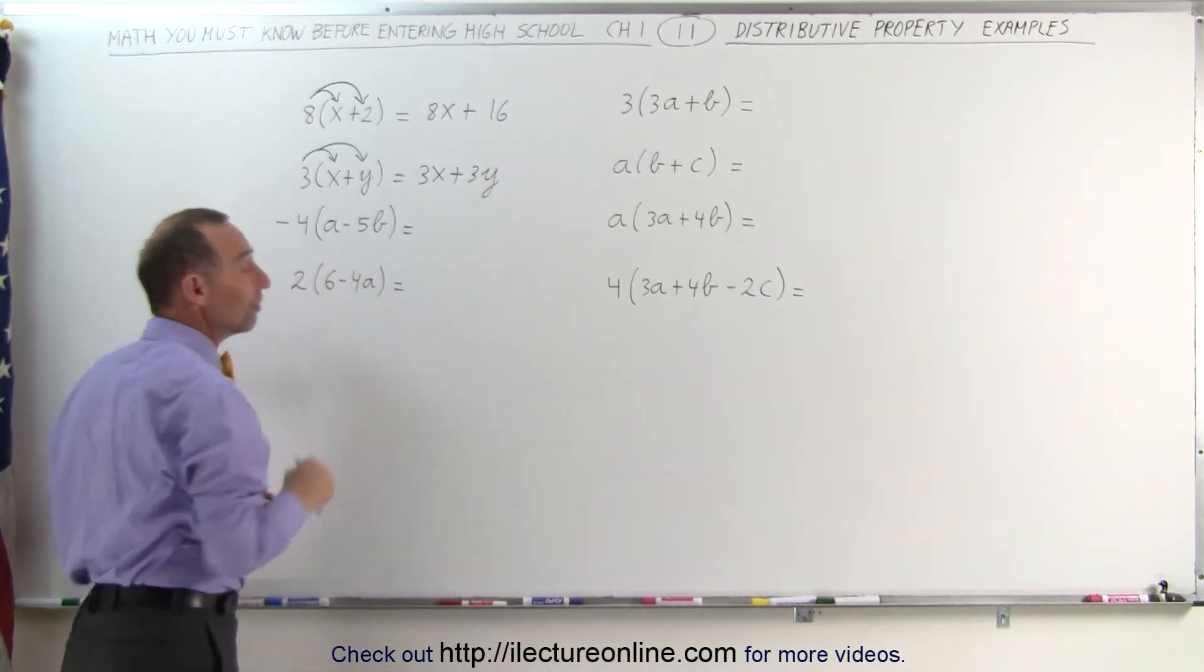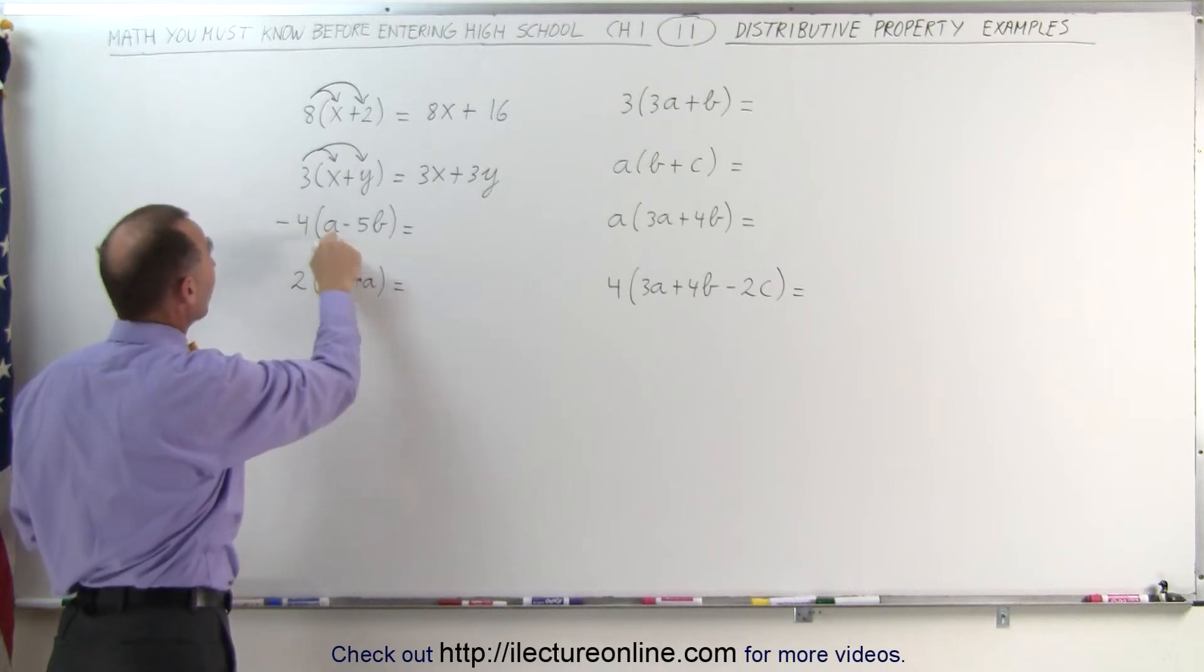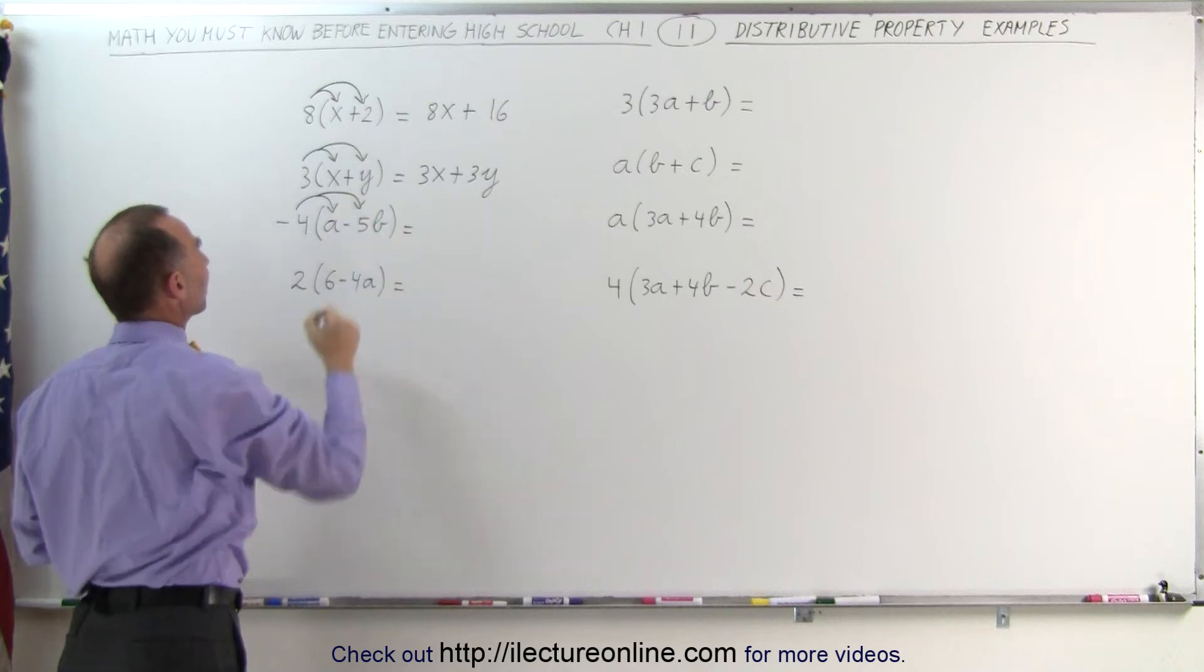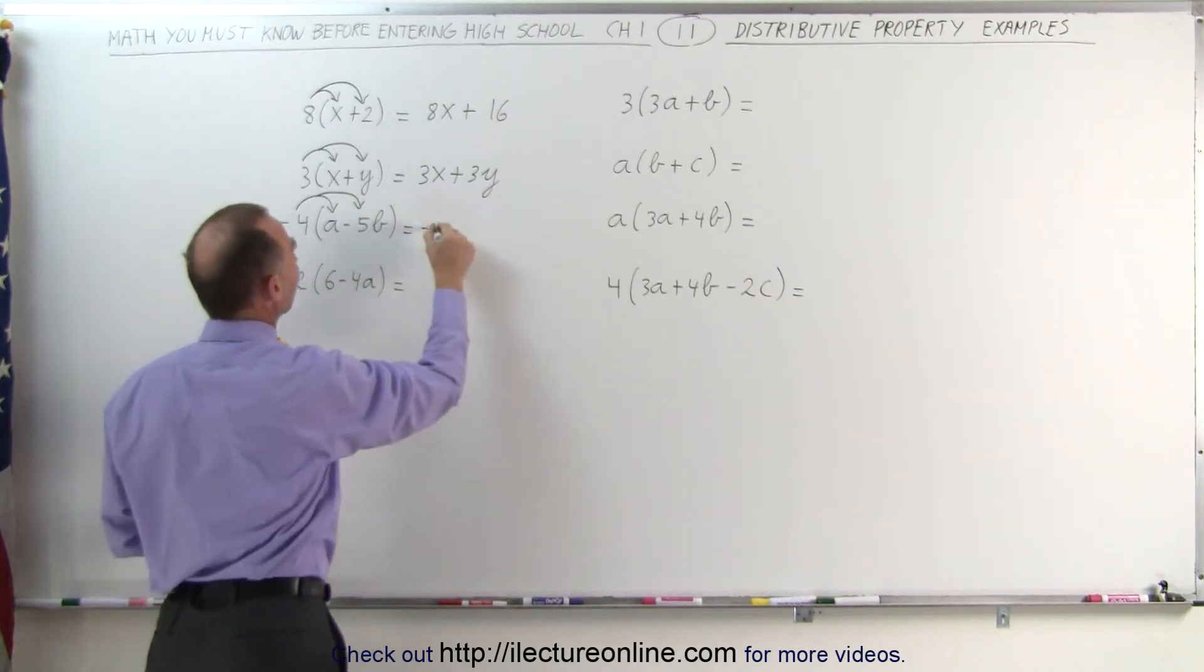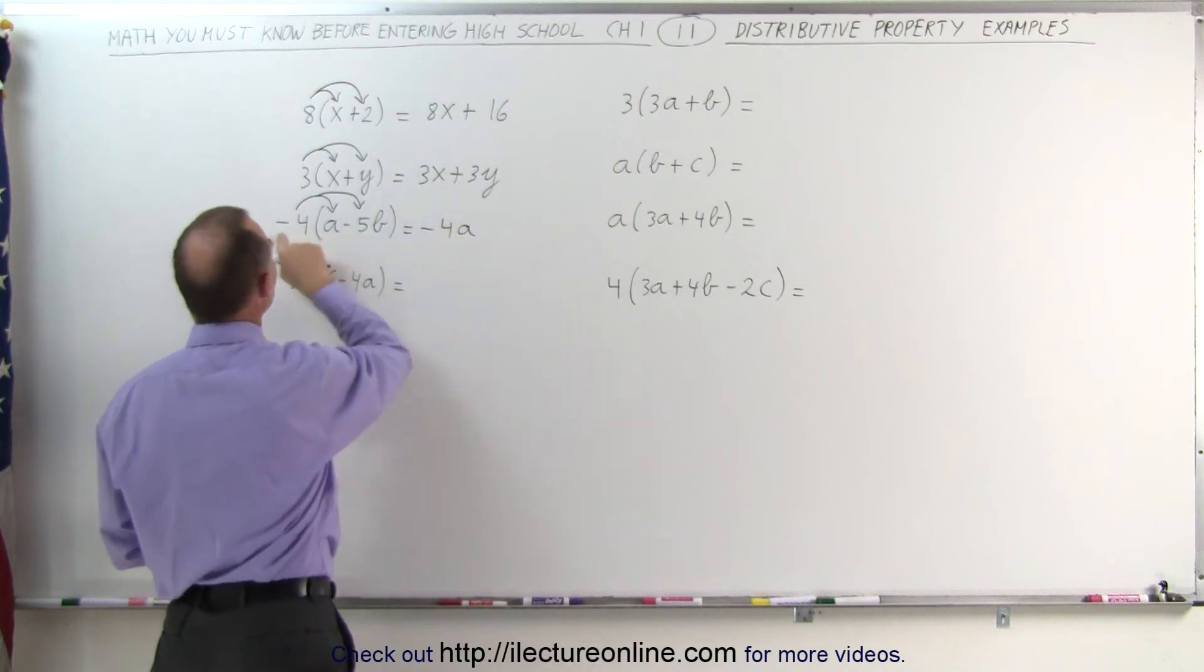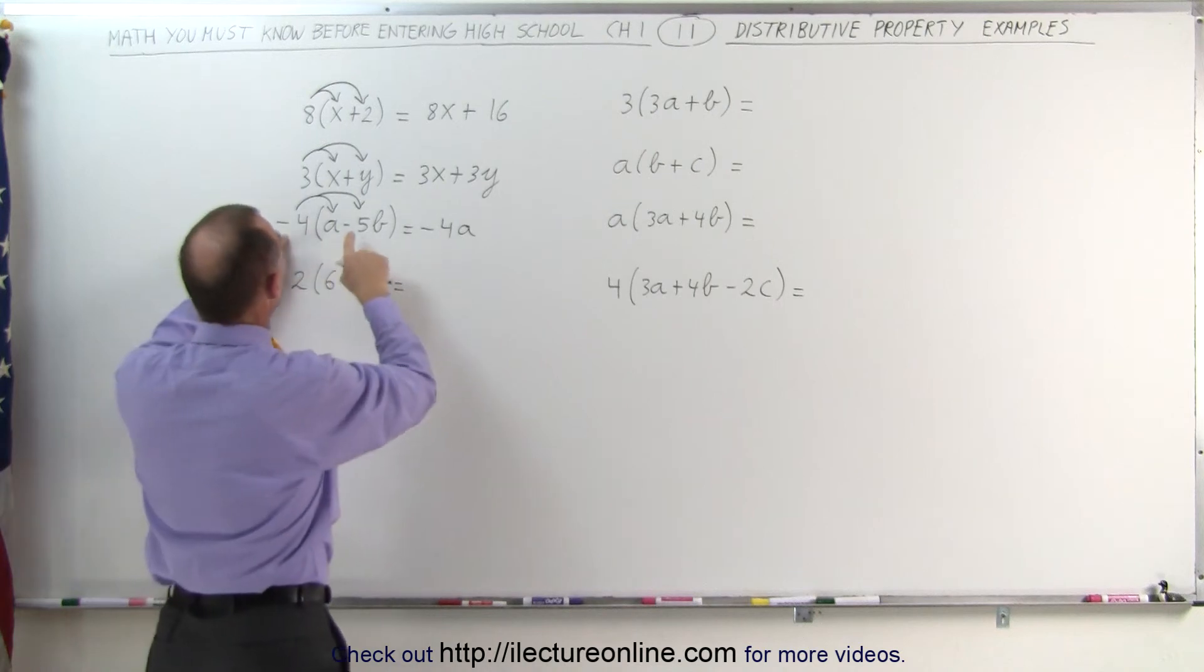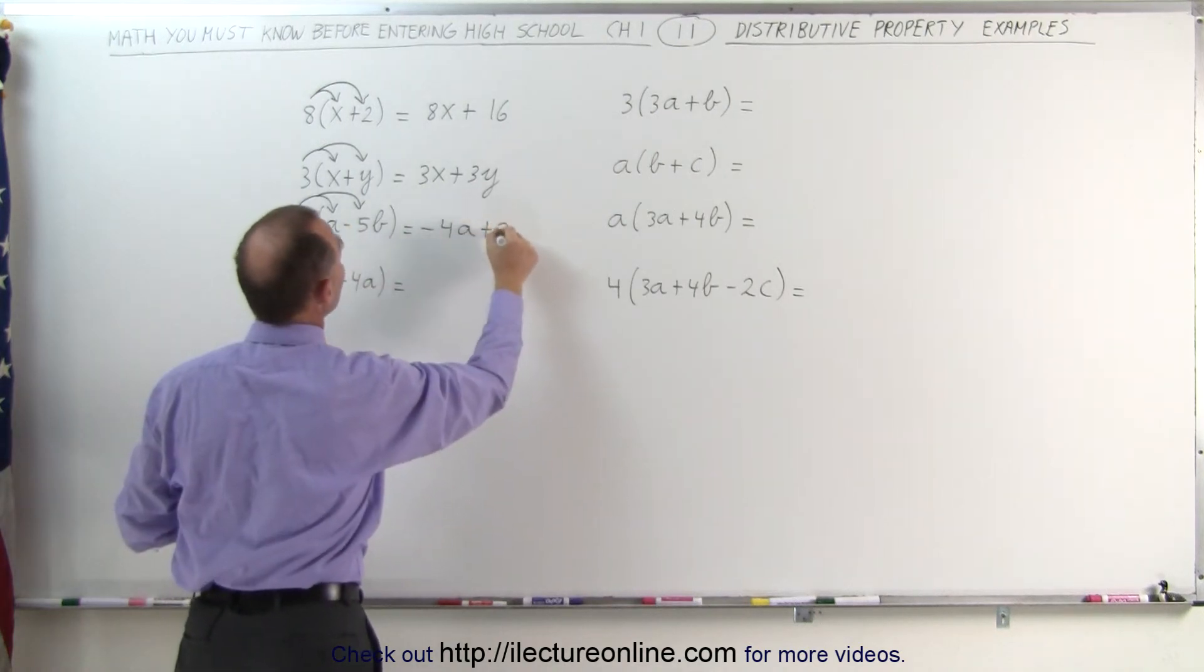If there's a negative sign in front, we have to distribute that negative sign as well. It is minus four multiplied times a, and minus four multiplied times a negative 5b. Negative four times a gives us negative 4a, and a negative times a negative, remember when you multiply two negatives together, you get a positive. So negative four times negative 5b becomes a positive 20b.